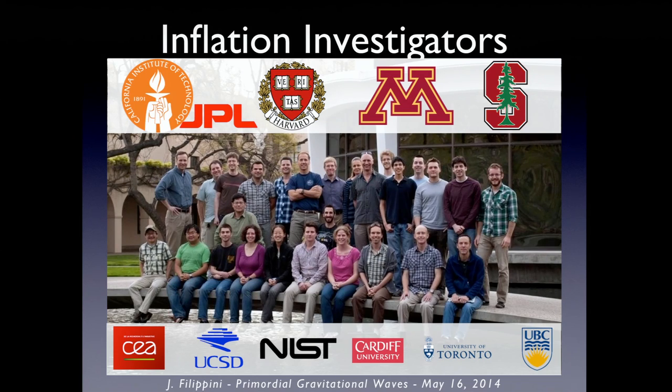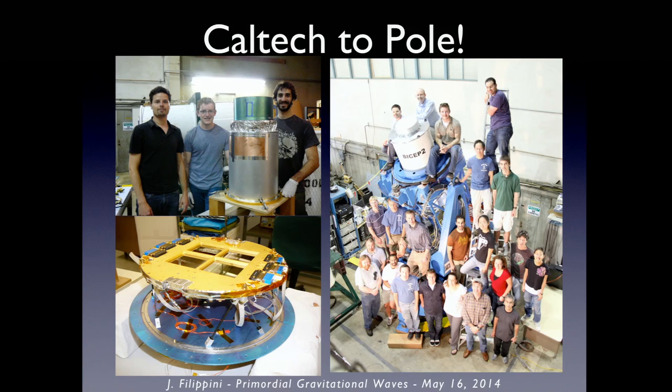I want to particularly note, because we're here at Caltech, that we're incredibly proud of this instrument. It was designed, built, tested, characterized, and deployed from here directly to the South Pole back in 2009. This is showing a couple of our grad students at the time, Justice Brevik and Randall Aiken, who had worked on the telescope. In the front row, I want to particularly note Andrew Lang, who was an enormous part of bringing together this team and making this experiment happen. He sadly passed away just days before he would have seen the first light image from this telescope.